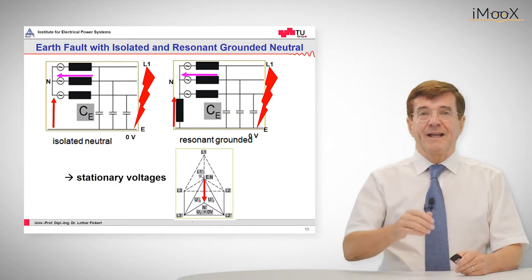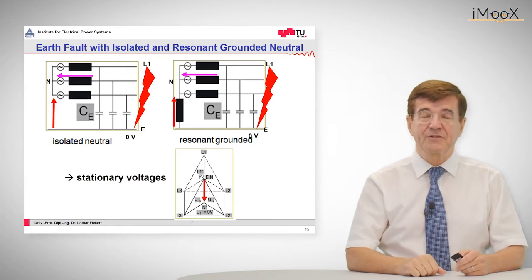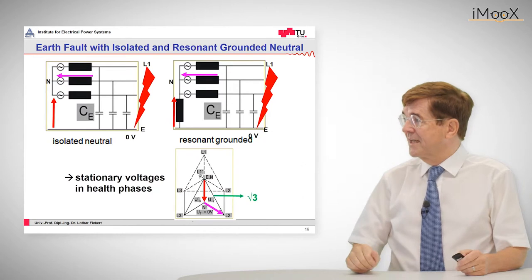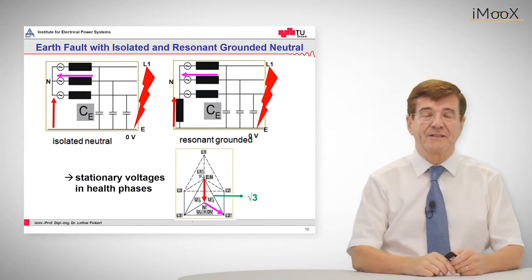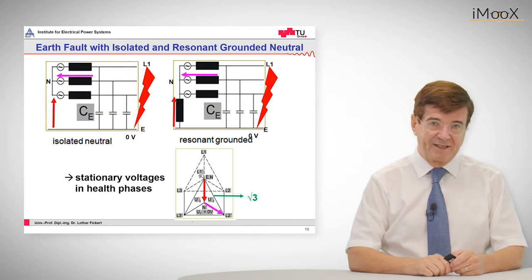Again, if we add on the neutral potential, the phase to ground for a healthy phase, for example L2, we get these violet indications and we get a phase voltage rise by a factor of root 3. This, by the way, was indicated in the previous lecture.